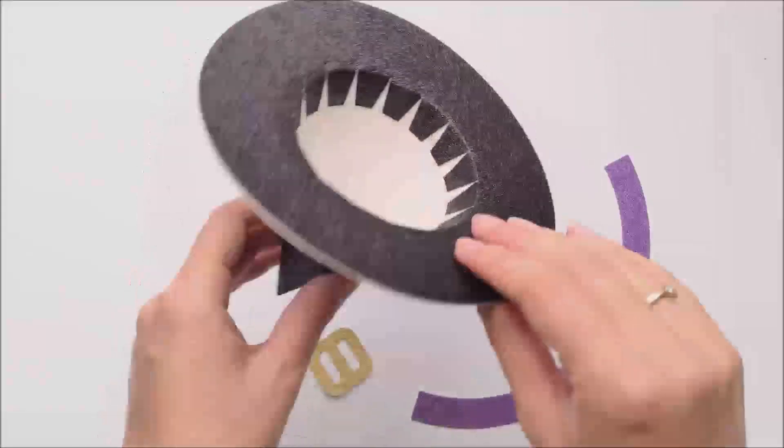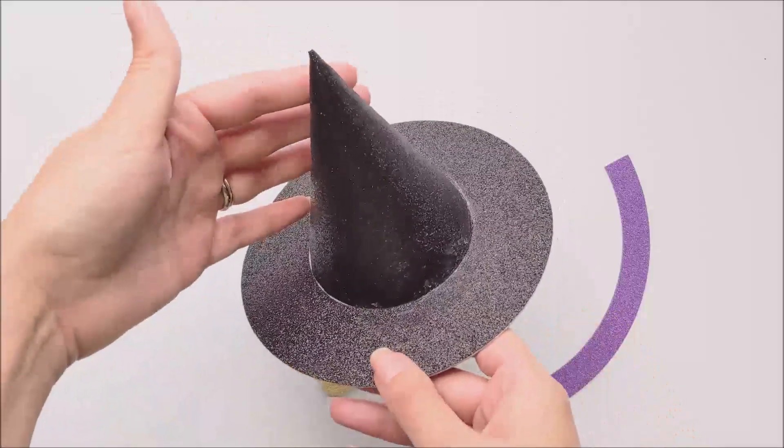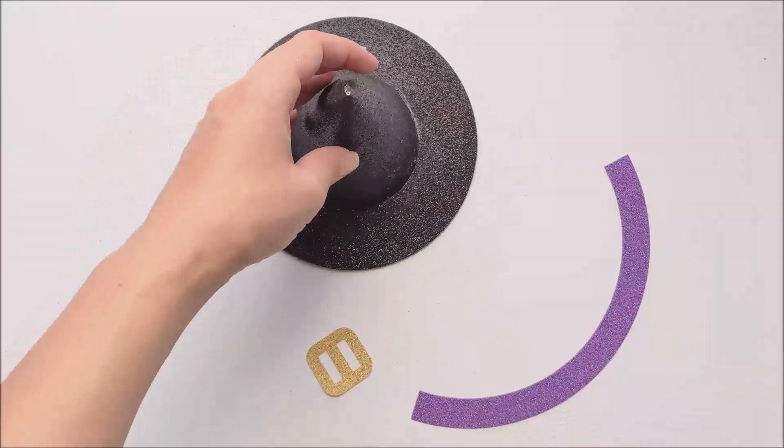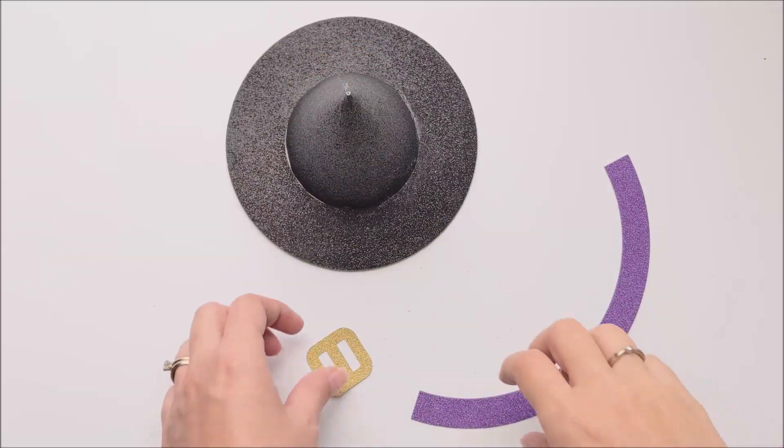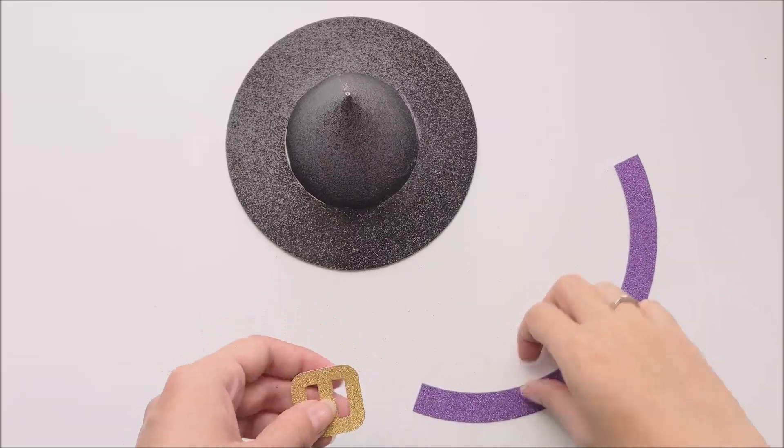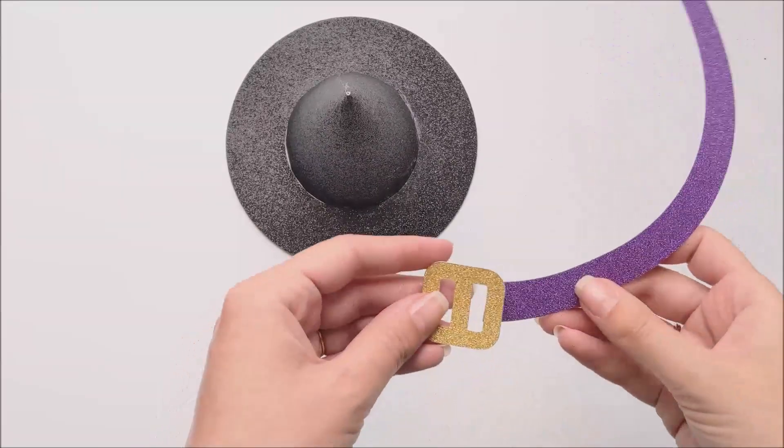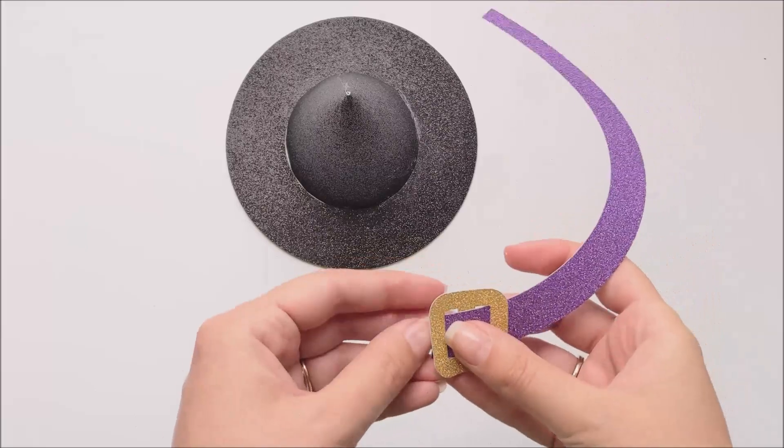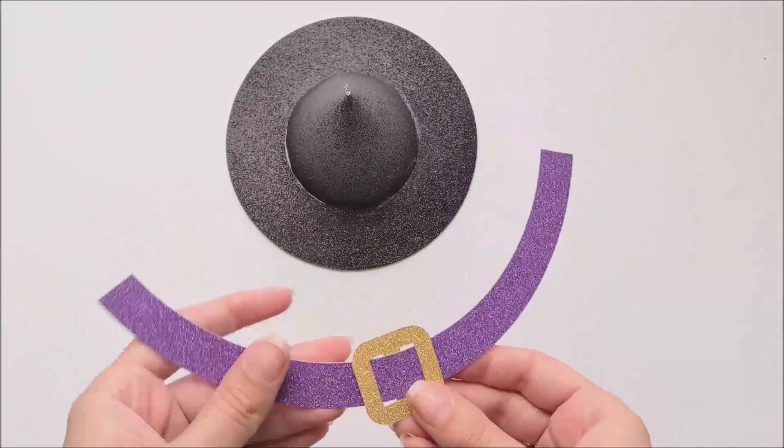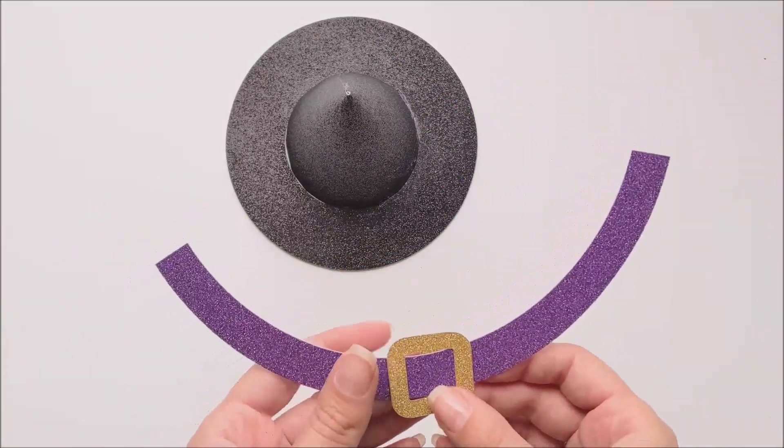We've got the top attached to the brim, so really all that's left is the little details. We're going to attach the hat band and the buckle. We just start with grabbing our hat band and sliding it through the buckle until the buckle is about halfway through. It doesn't have to be perfect.